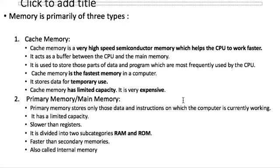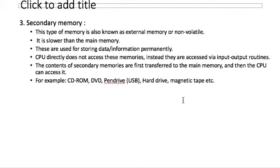Cache memory is not permanent. Primary memory (main memory) is divided into RAM and ROM. It has limited capacity — slower than registers but faster than secondary memory. Secondary memories include pen drives and hard drives. RAM and ROM are internal memory because they are inside the computer.